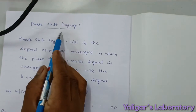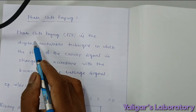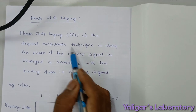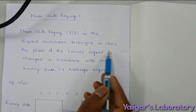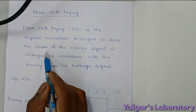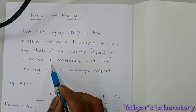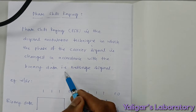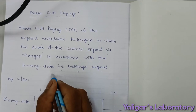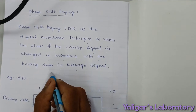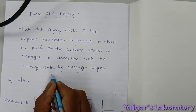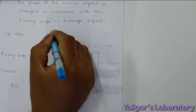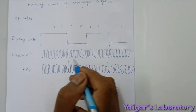Phase shift keying is a digital modulation technique in which the phase of the carrier signal is changed in accordance with the binary data (the message signal), while keeping the amplitude and frequency constant. Only the phase is changed; the other two parameters remain constant.